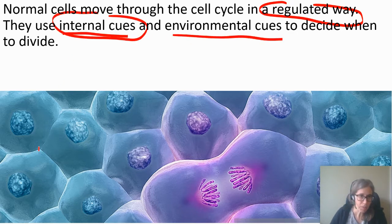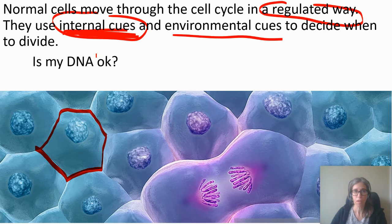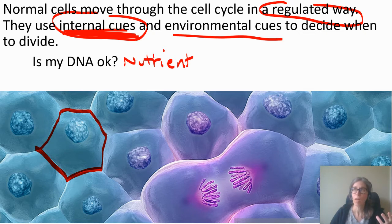By internal cues, I mean inside the cell itself. An internal cue might be: is my DNA okay? Did I copy my DNA appropriately? Are there any mutations I can find? Another internal cue might be: do I have enough nutrients? Am I kind of starved, or do I have plenty of nucleotides — A, T, C, and G? Do I have enough energy — ATP? Have I made enough ATP? Do I have enough amino acids to make the proteins I need? Have I grown enough? Those are all internal cues.